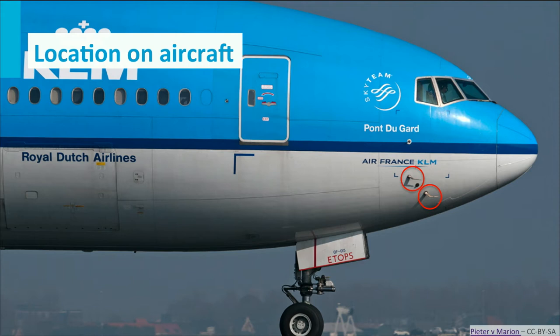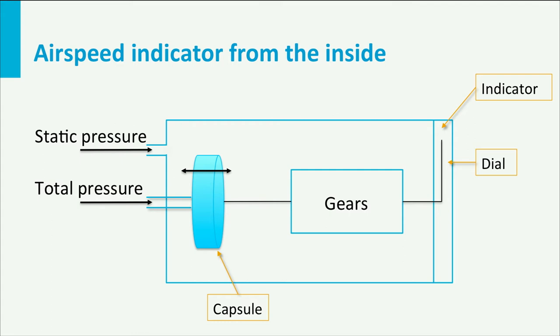Schematically, an airspeed indicator looks like this on the inside. There is a sealed chamber which is connected to the static pressure port and the total pressure is connected to a capsule which expands as a function of the internal pressure, the total pressure and the external pressure, the static pressure. So the pressure difference is a measure for the airspeed and is provided to the dial through a set of gears.